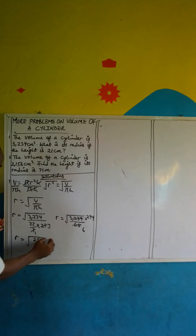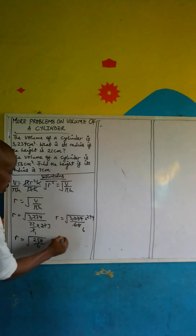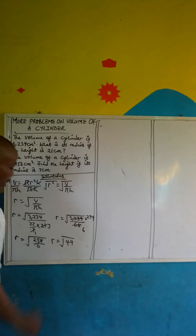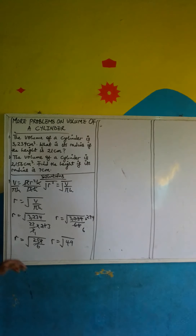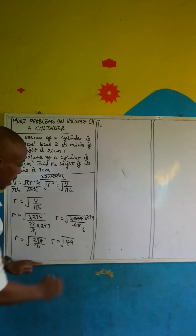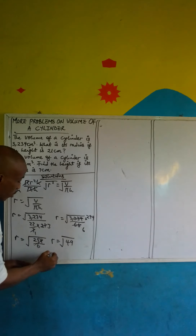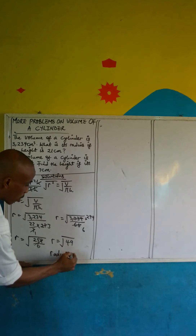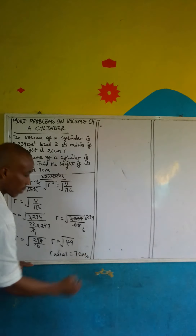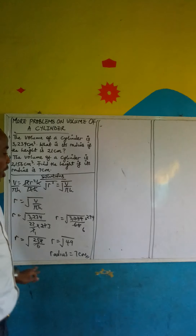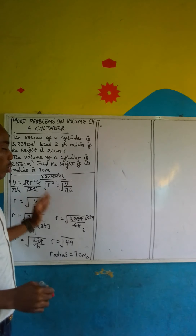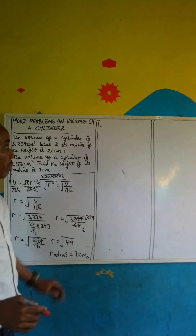r will be equal to the square root of 294 over 6. Dividing this gives r equals the square root of 49. The square root of 49 is 7, so our radius is equal to 7 centimetres. I changed the subject of formula, made r the subject, and solved the problem.